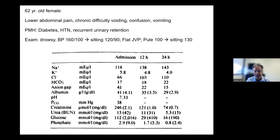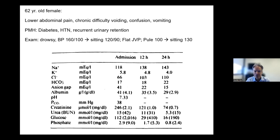If you add the delta gap of 29 to the current bicarbonate of 17, you get a number well above 25 — perhaps 40-something. If you get a number above 25, it means there's something else causing hyperbicarbonateemia had the metabolic acidosis not been present, and you have to account for that with an acid-base diagnosis.